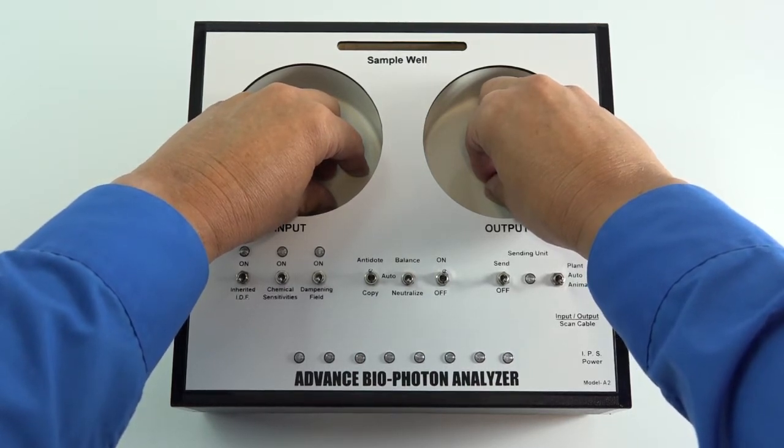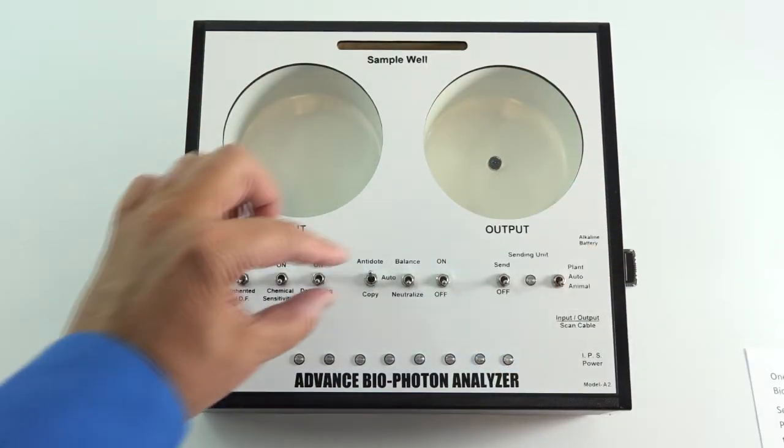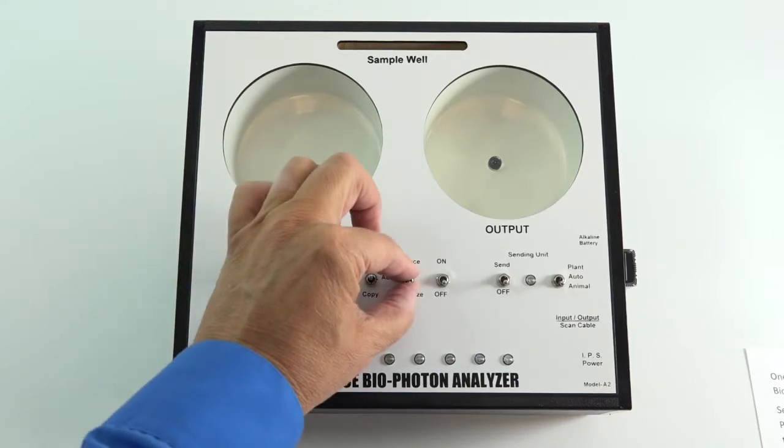After the completion of the 40-second sequence, then turn the ABPA off and reset the control switches to auto-auto.